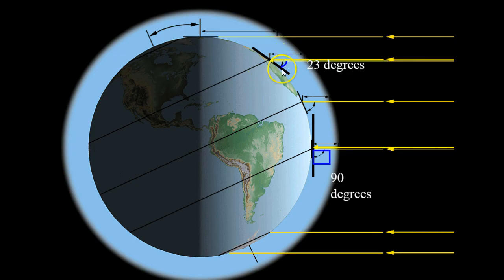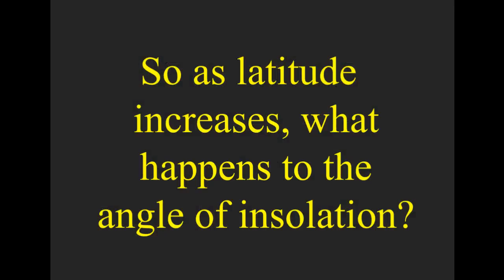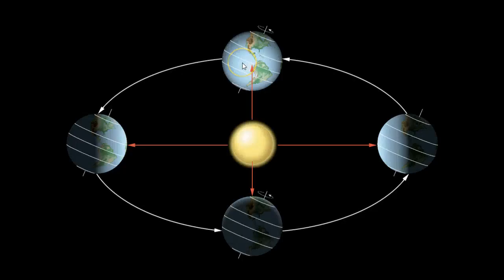You can see the angle being received from the sunlight — the energy is being received. So as latitude increases, what happens to the angle? Let's look at this picture, which depicts the different angles of insolation from different locations as we revolve around the sun.